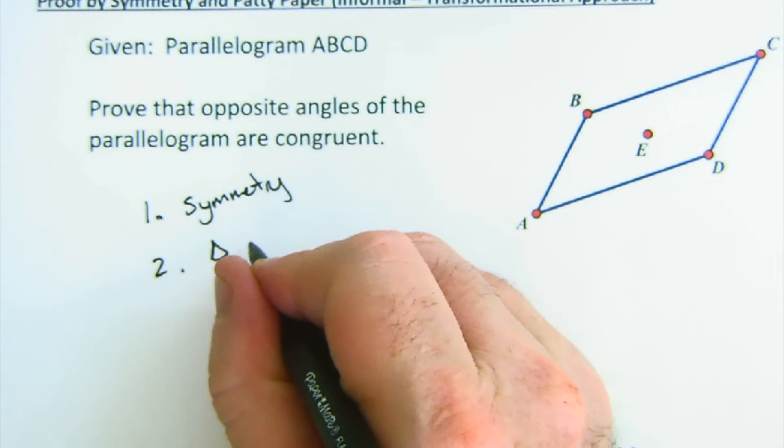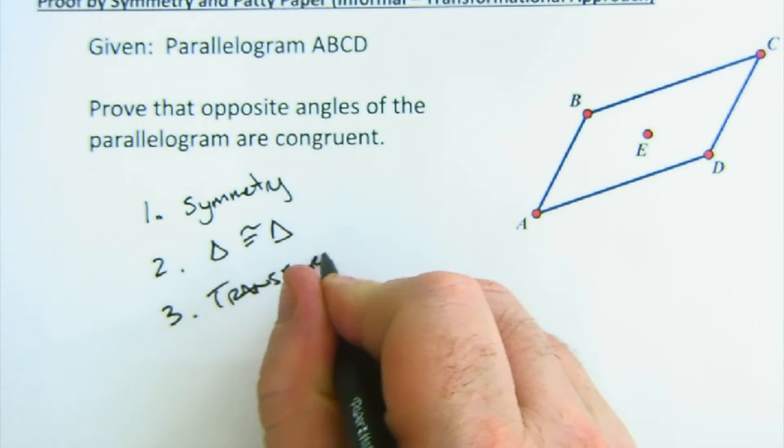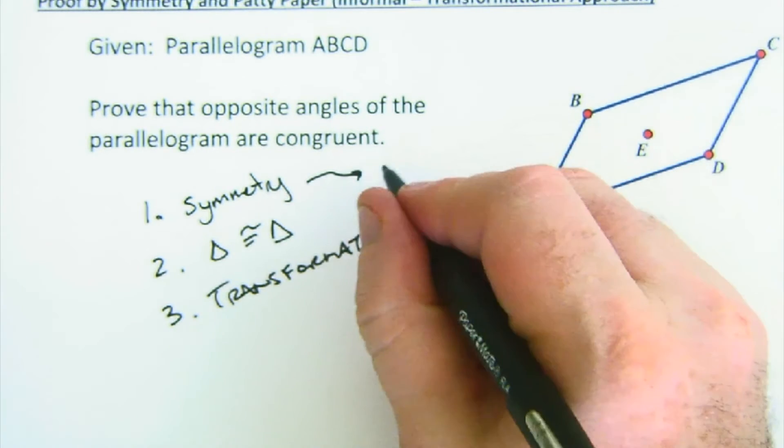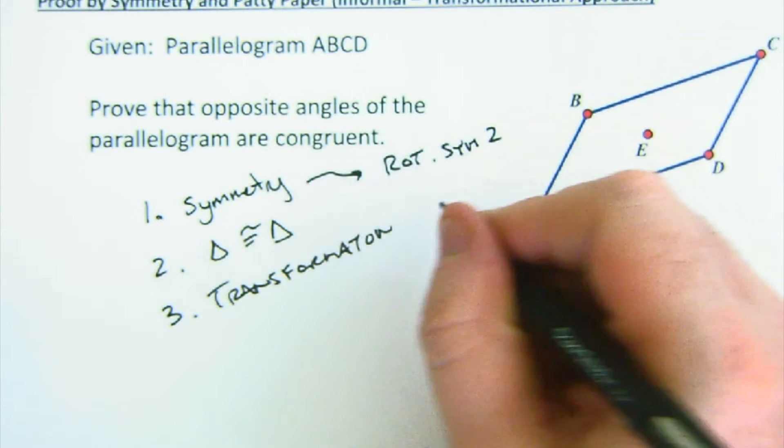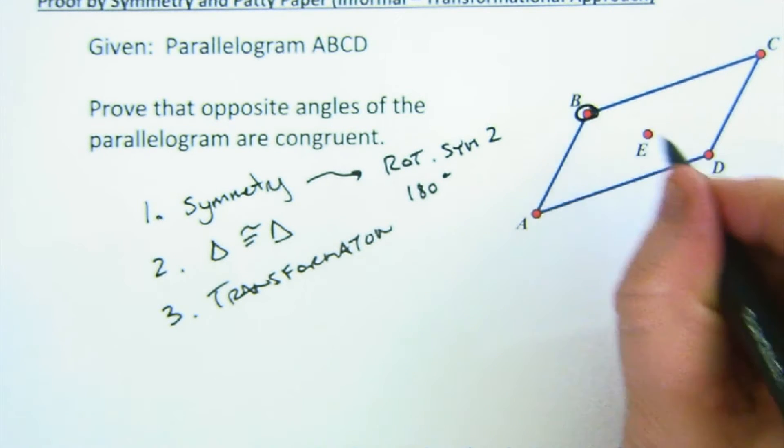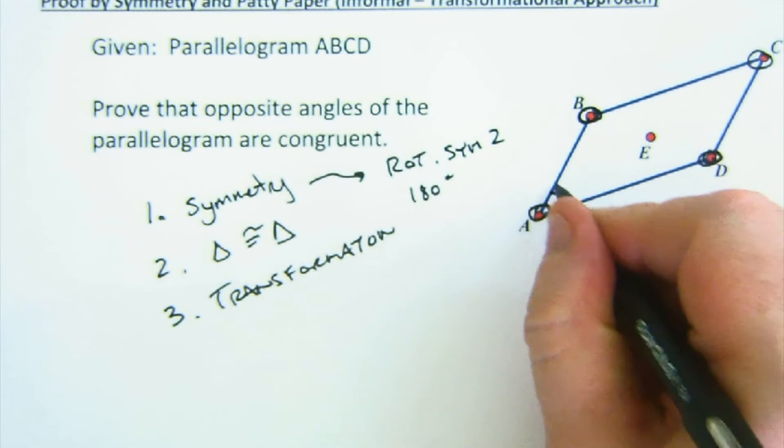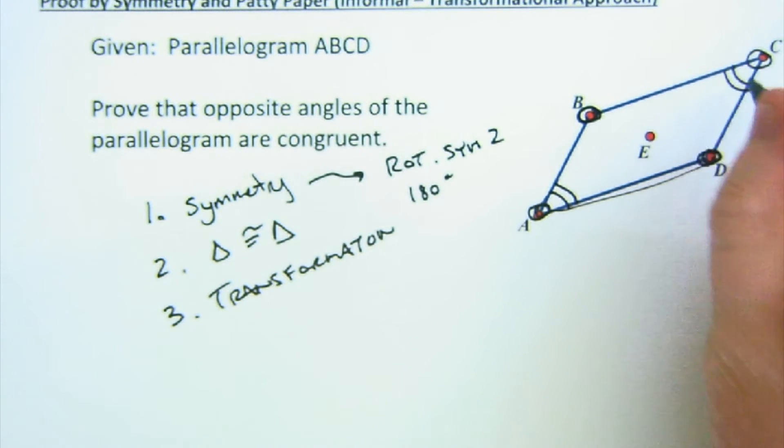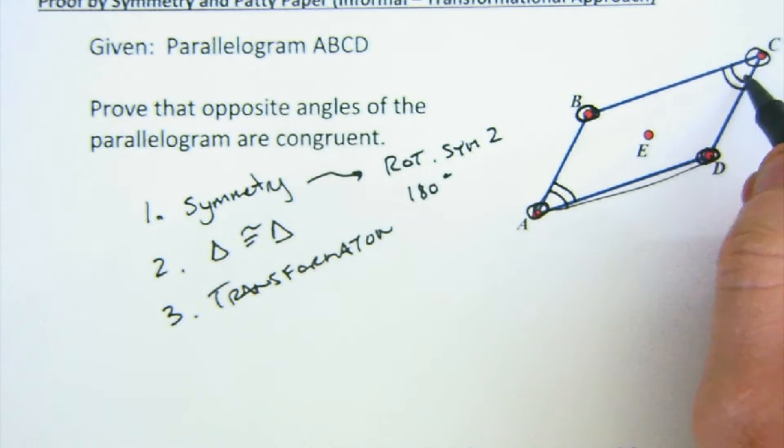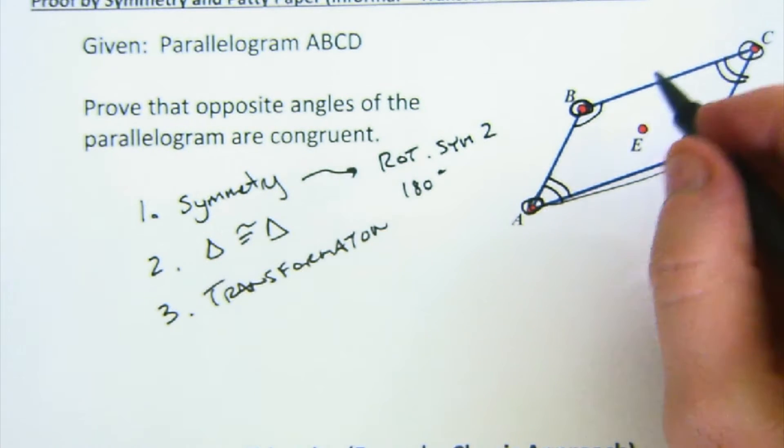Now again, kind of three approaches here. You could use a symmetry approach, you could use triangles being congruent, or you could do a transformational approach. If you're thinking symmetry, you know that this parallelogram has rotational symmetry order of two, means it maps onto itself at 180 degrees. And so I know that B would map to D and D would map to B. I know A would map to C, and so we would get a mapping of this angle exactly onto that angle because that's how symmetry works.